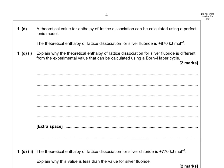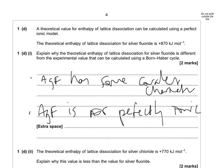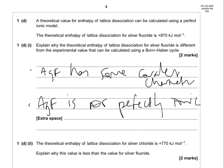Next question: a theoretical value for the enthalpy of lattice association can be calculated using a perfect ionic model. The theoretical enthalpy of lattice association for silver fluoride is +870. Explain why the theoretical enthalpy of lattice association for silver fluoride differs from the experimental value. This is all about the perfect ionic model — you always need to talk about covalent character. You get the two marks for saying that AgF has some covalent character, and because AgF is not perfectly ionic. Alternatively you could say AgF doesn't consist of point charges, or they're not perfect spheres — anything synonymous with that answer.